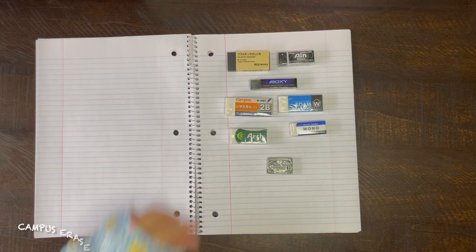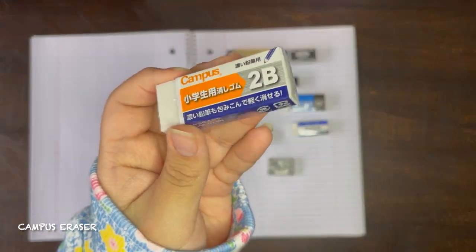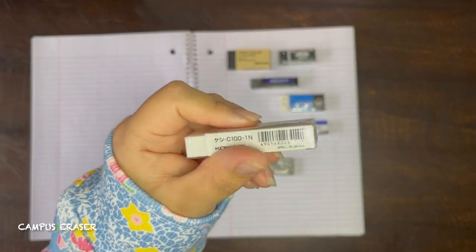Up next we have this Kokuyo Campus Student 2B eraser. This eraser is meant to be for 2B to 4B pencil lead, but because it came in the package and I don't have any of that kind of lead I still wanted to try it out.